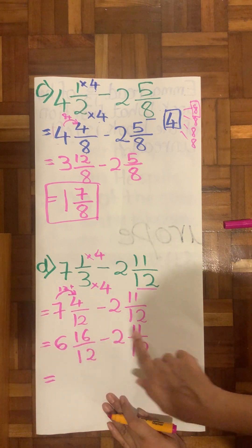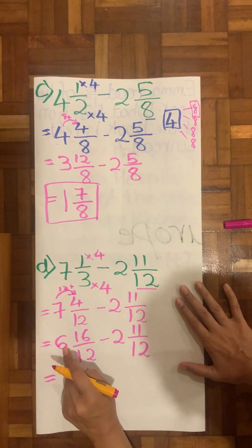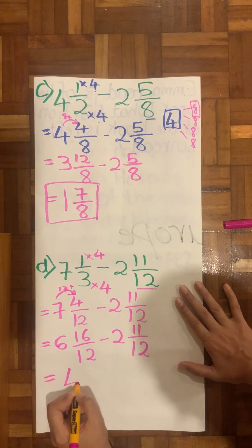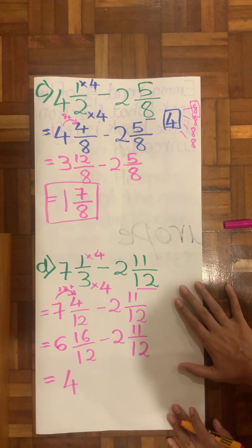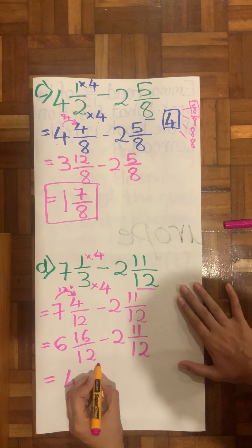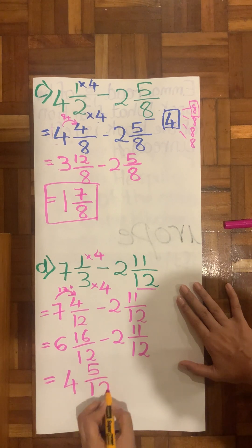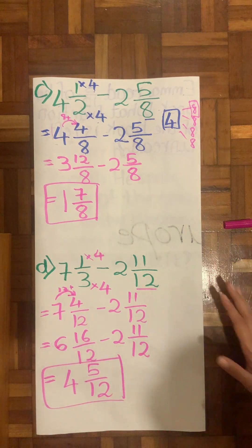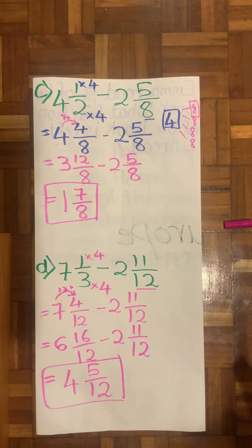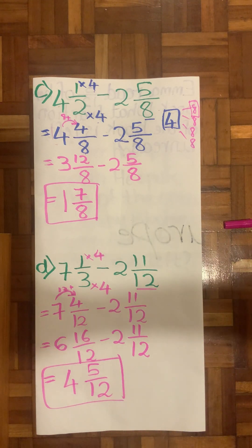Because I took 1, 12 from here, this will become 6. 12 plus 4 is 16 over 12 minus 2¹¹⁄₁₂. Now I will easily subtract because first I saw my fraction ⁴⁄₁₂ will not be able to subtract 11. So I made it rich by taking the 12. Now I can first deal with the wholes. 6 minus 2 is 4, and then 16 minus 11 is my ⁵⁄₁₂.